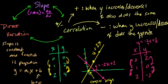You have these three words that are thrown around: correlations, variations, and slopes. They all connect. But a direct variation is specifically when you have a proportional relationship where the line crosses the origin. Hope this helped.